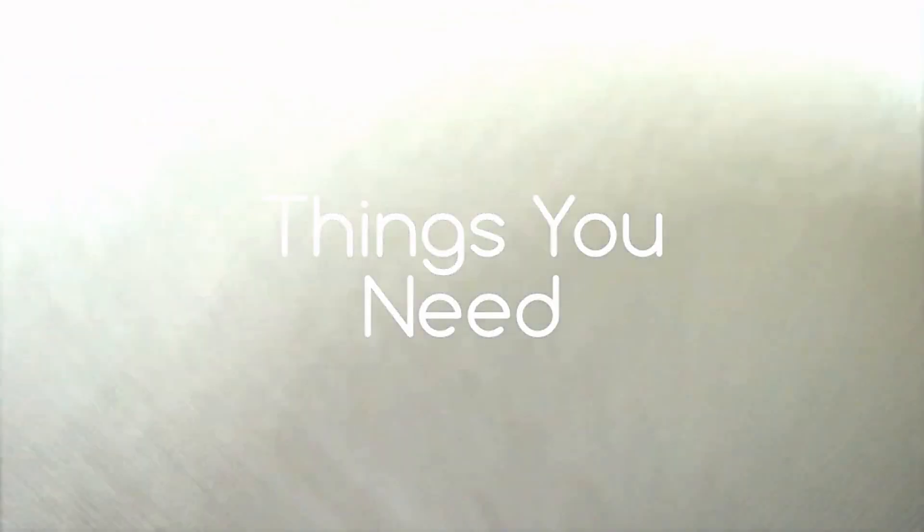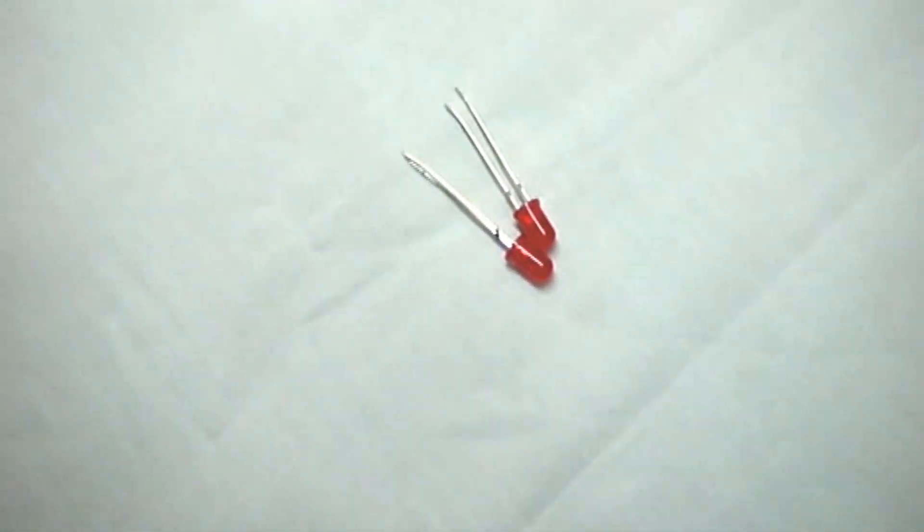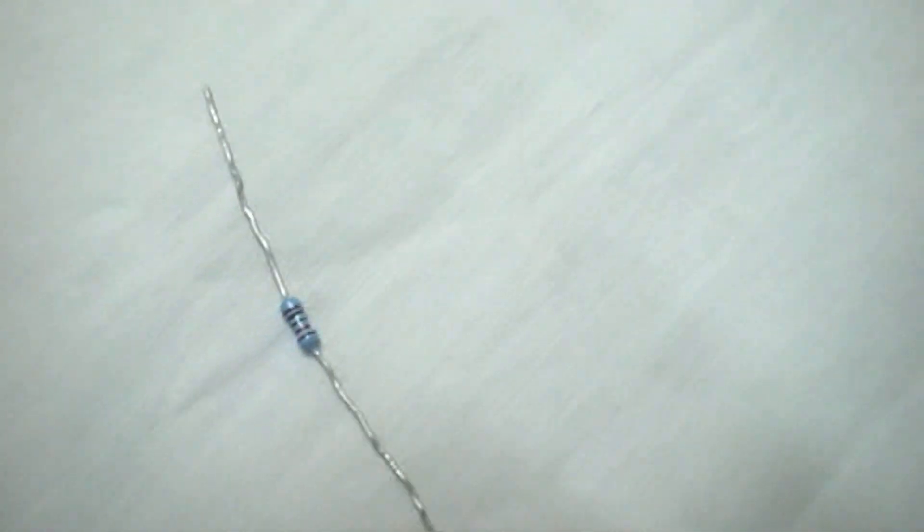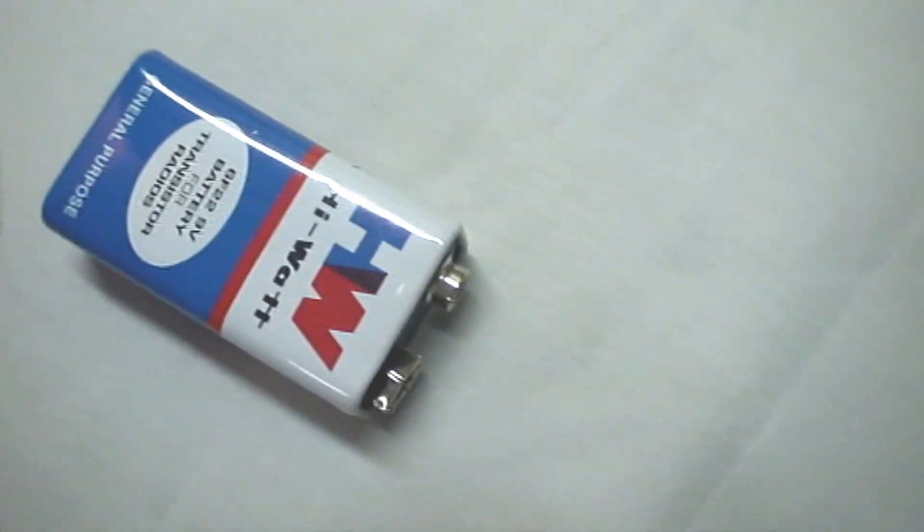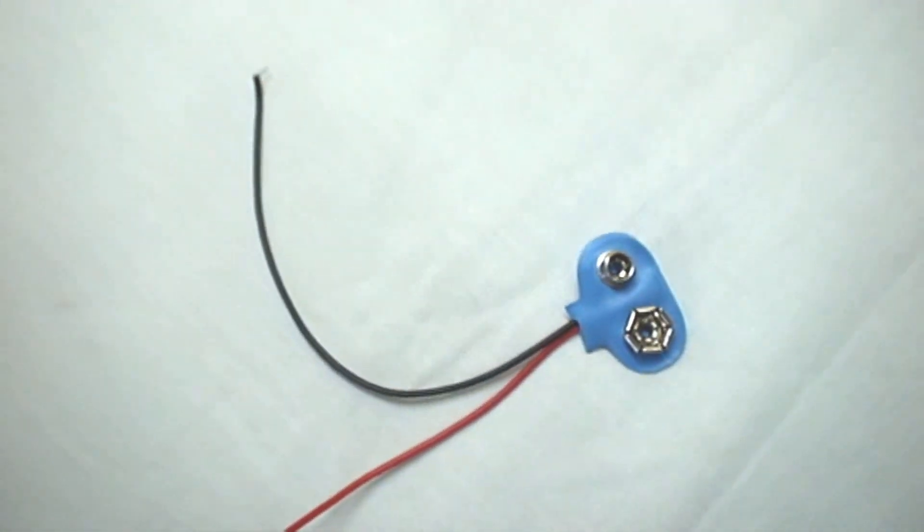Today we are going to show you how to make a simple relay circuit. The things you need are two LEDs, a 10k ohm resistor, a 9V battery, a 9V battery clip, and a switch.